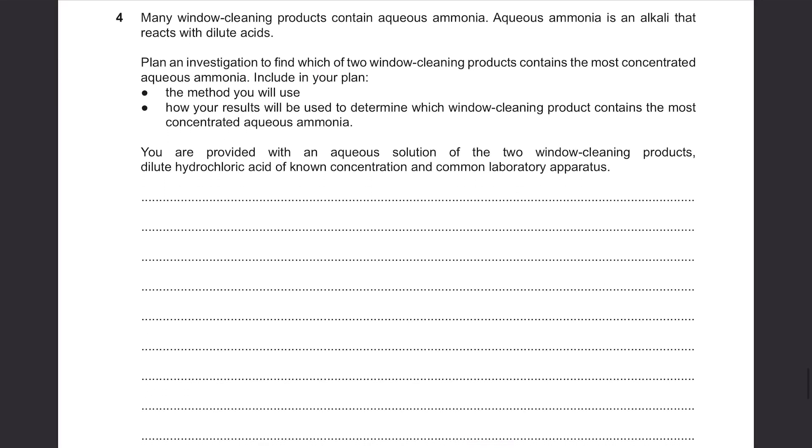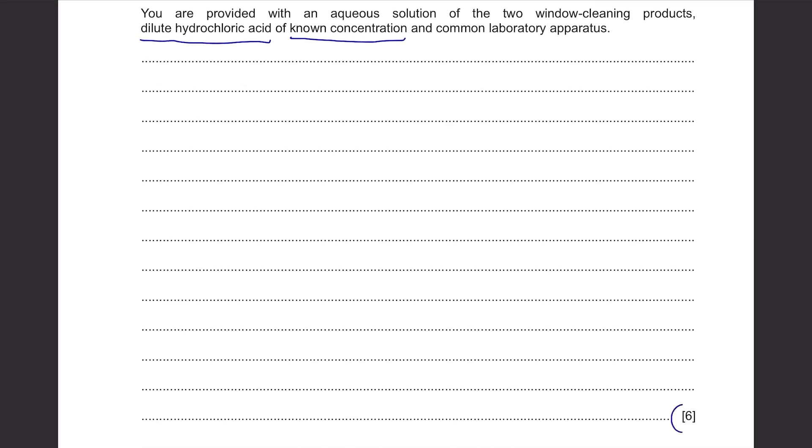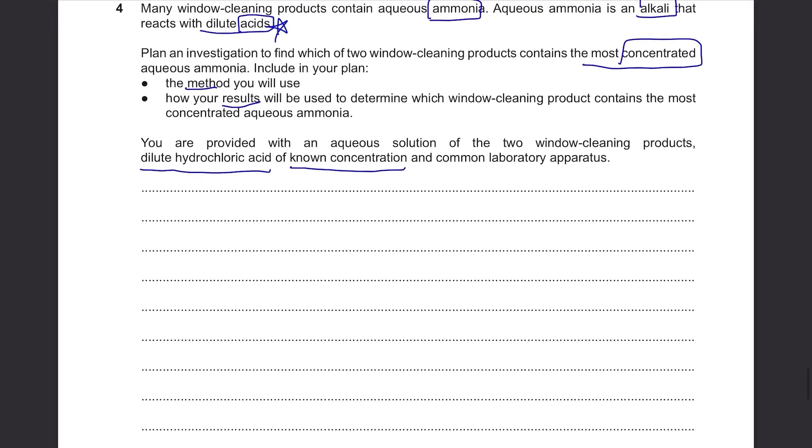Question 4: Many window cleaning products contain aqueous ammonia. Aqueous ammonia is an alkali that reacts with dilute acids. Plan an investigation to find which of two window cleaning products contains the most concentrated aqueous ammonia. They've talked about these acids so obviously you'll have to include some procedures related to adding the acids. The method you'll use, how your results will be used to determine which window cleaning product contains the most concentrated aqueous ammonia. You're provided with an aqueous solution of the two window cleaning products, dilute hydrochloric acid of known concentration, and common laboratory apparatus. This is a 6 mark question, but don't just write 6 points. You may lose 1 point because that point was somehow not in the mark scheme for your paper. So always write like 8 or 9 if possible to guarantee a full mark.